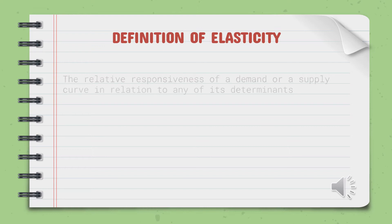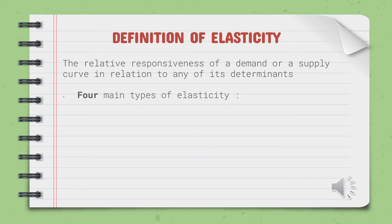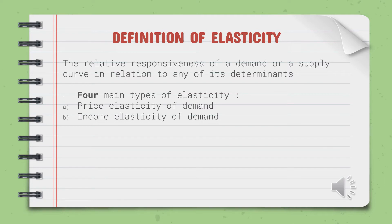Elasticity refers to the relative responsiveness of a demand or supply curve in relation to any of its determinants. We can also define elasticity as a measure of the responsiveness of one variable to a change in another variable. There are four main types of elasticity: Price Elasticity of Demand (ED), Income Elasticity of Demand (EY), Cross Elasticity of Demand (EX), and Price Elasticity of Supply (ES).